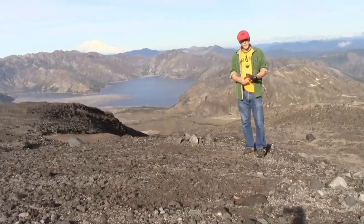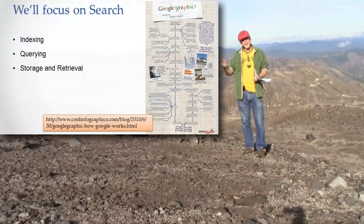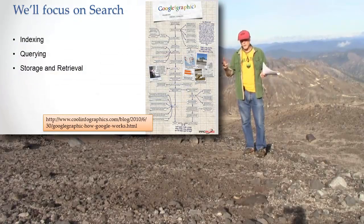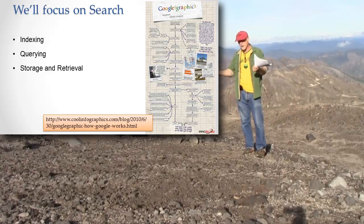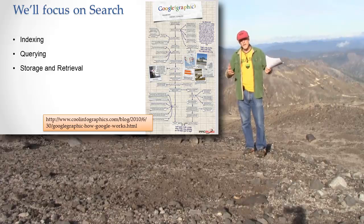So we've talked about two of the three big subjects in Google search. One is indexing. The second is querying. The third one we need to talk about is results. You issue a query, it finds the right pages — say it's on these 9,375 pages. Then how does it tell you that, and most importantly, which page does it put first as the one it thinks you want?